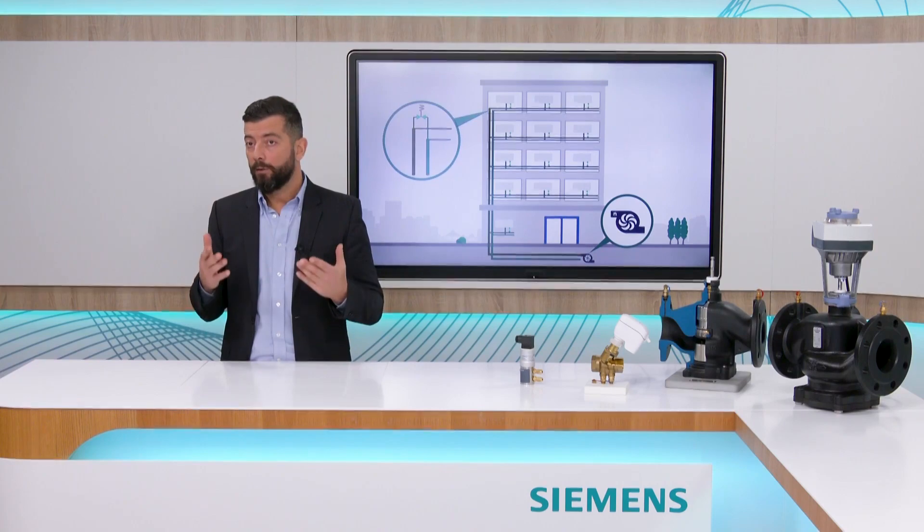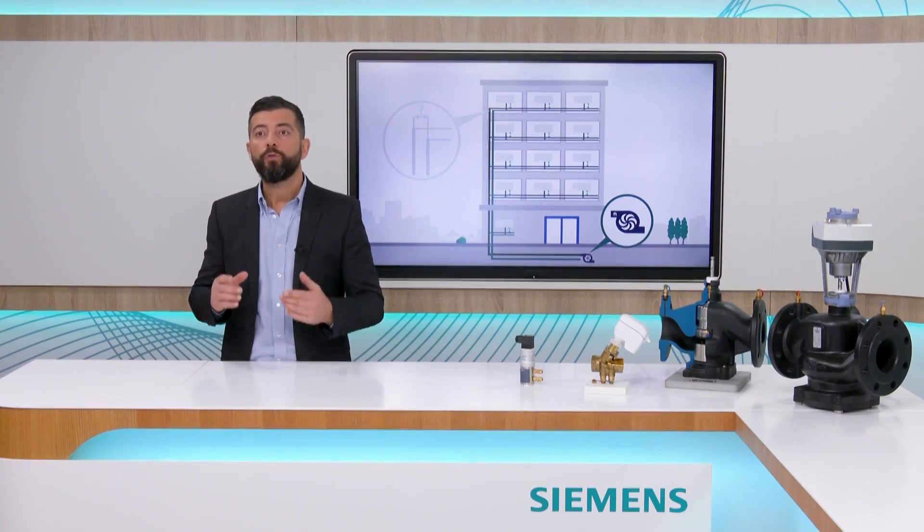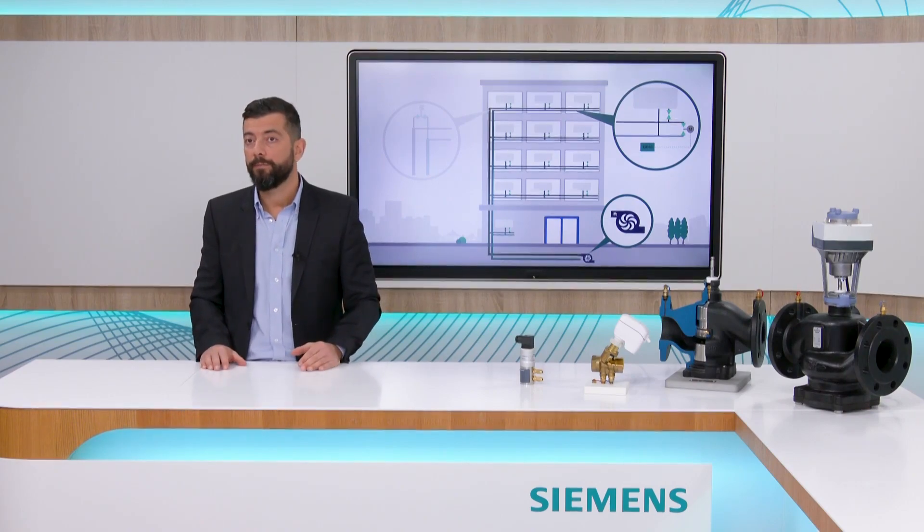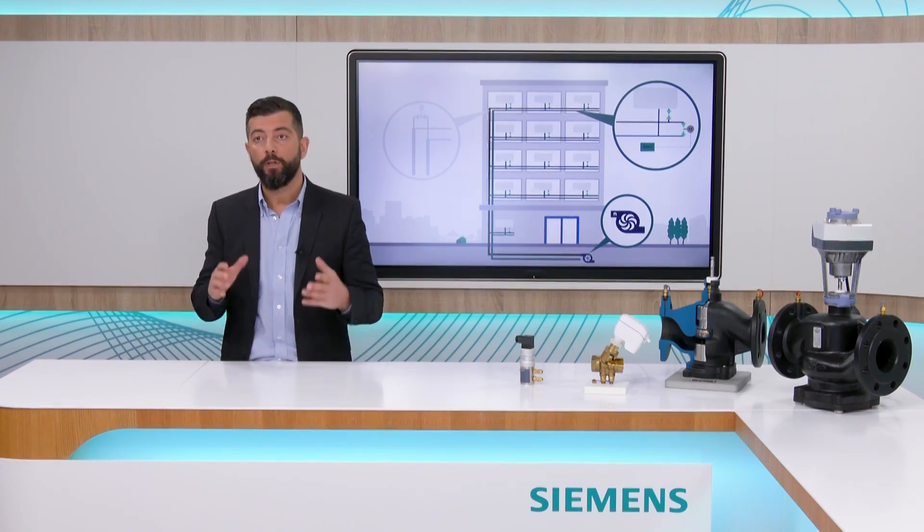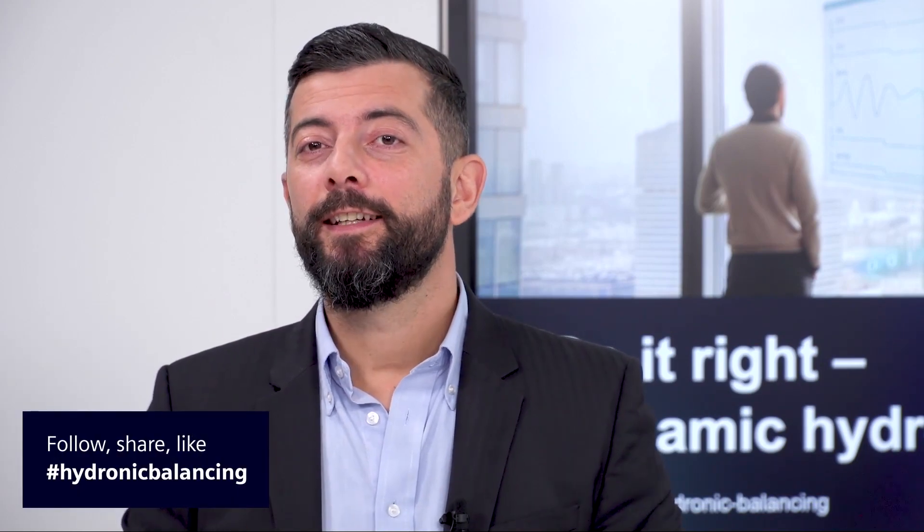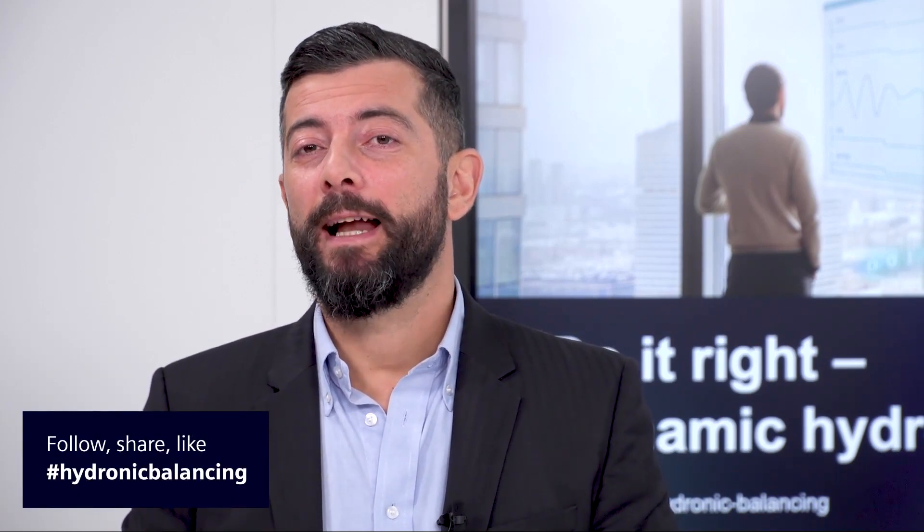The best solution I would like to suggest is to use controlled bypasses, which open only when it's needed and perhaps are even dynamically balanced, to reduce the impact of the recirculating water on the delta T. Thank you for watching. Do it right. Dynamic Hydronic Balancing.